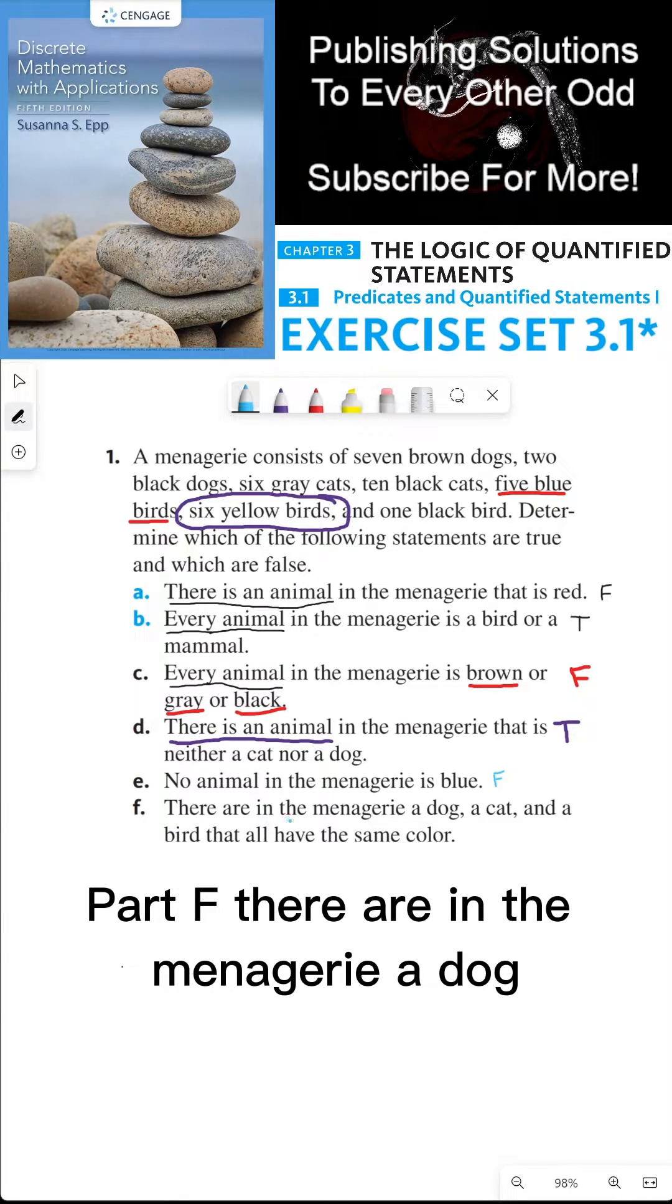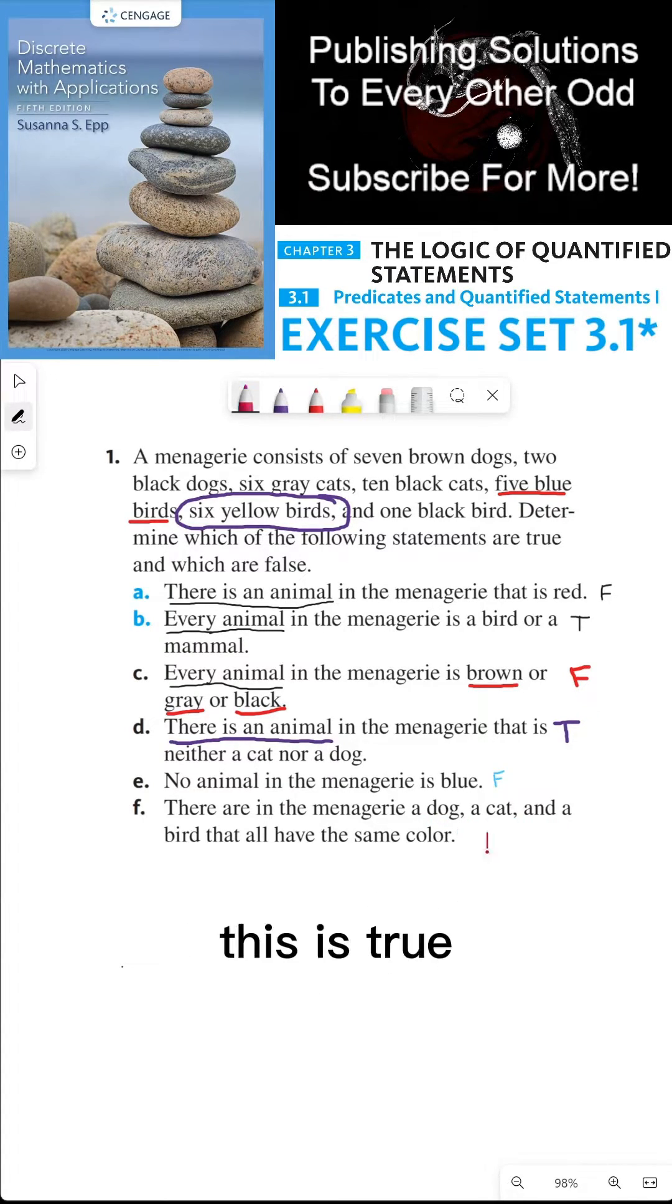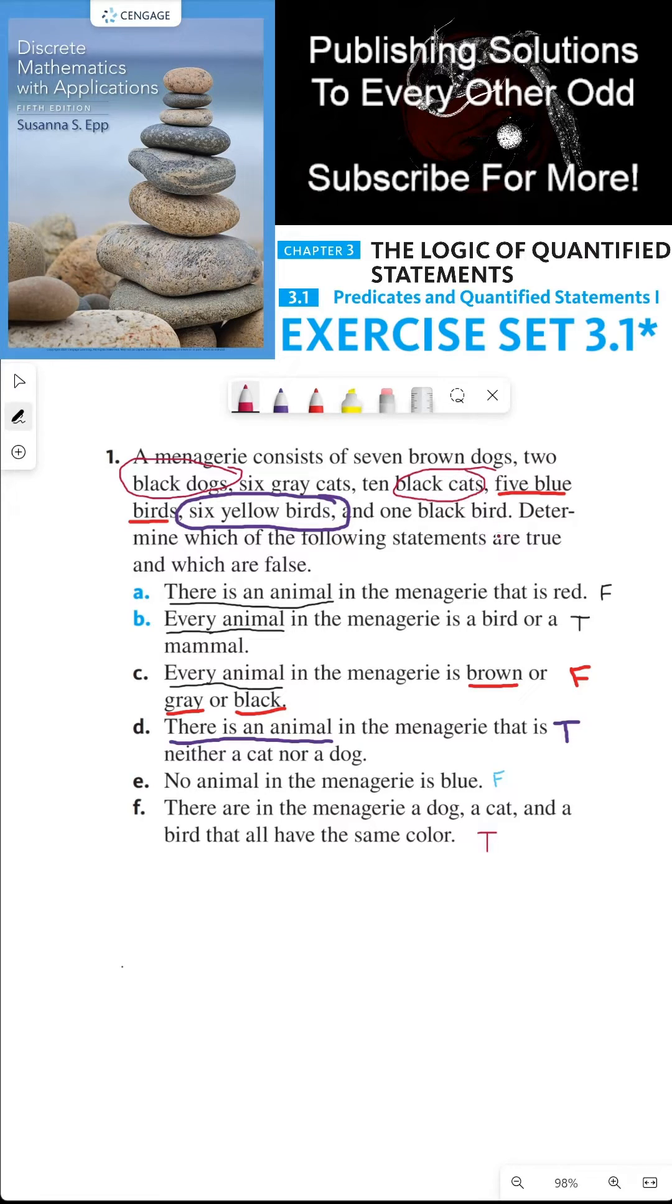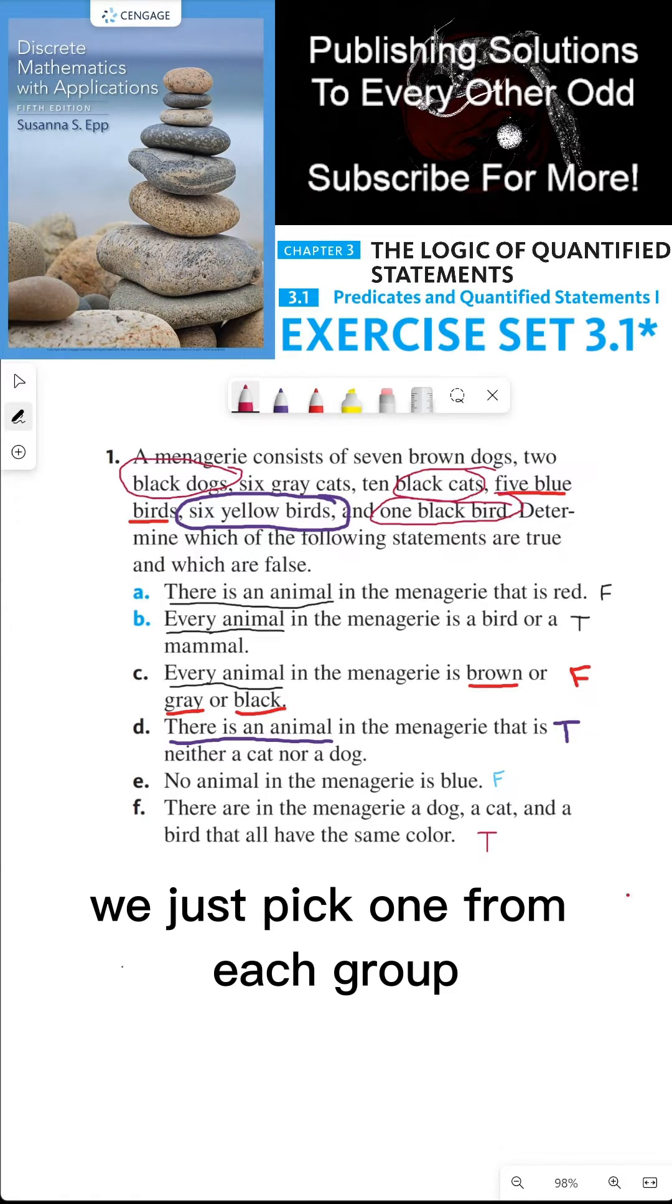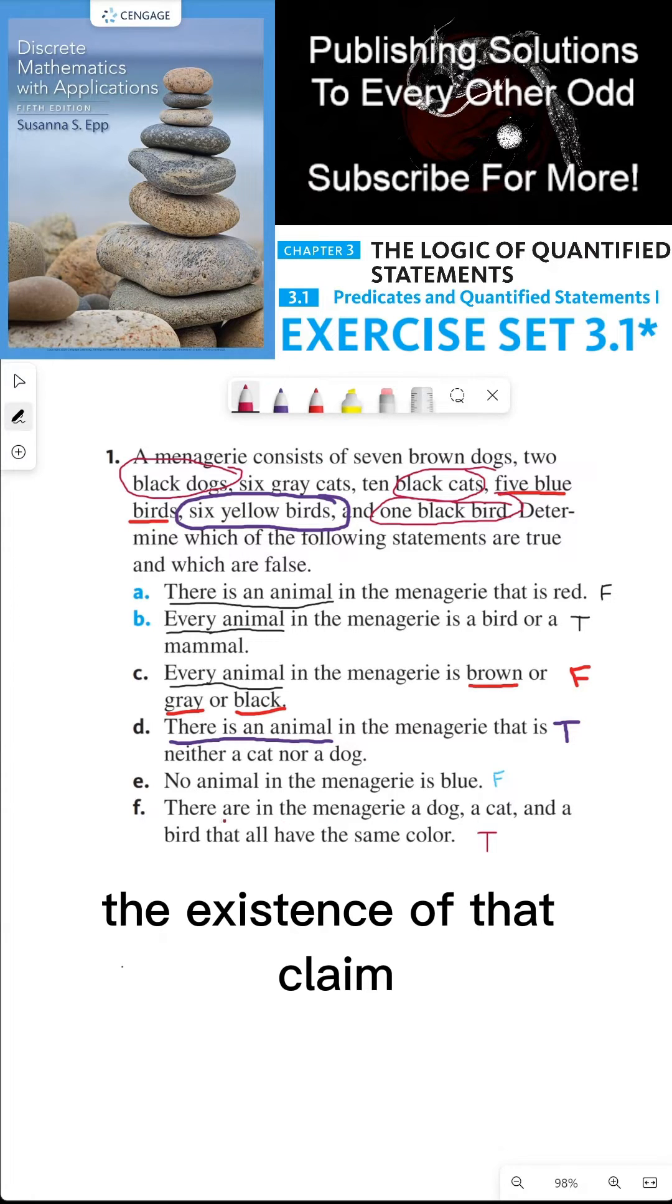Part F. There are in the menagerie a dog, a cat, and a bird that all have the same color. This is true because we can pick a black dog, a black cat, and a black bird. We just pick one from each group, and so we have the existence of that claim.